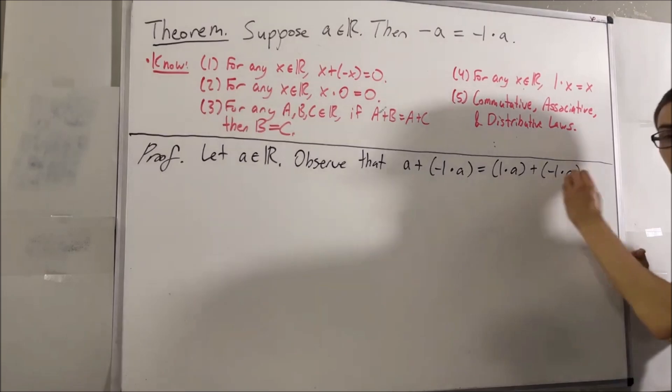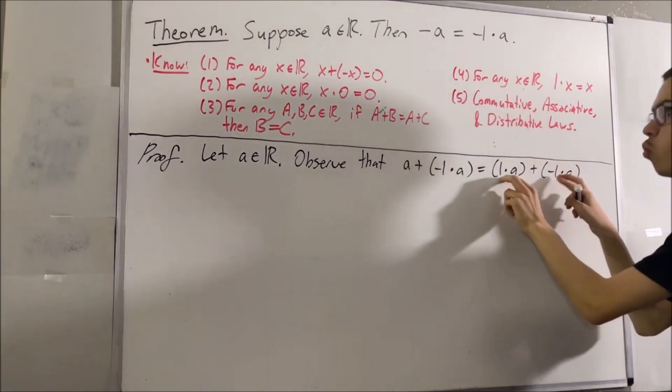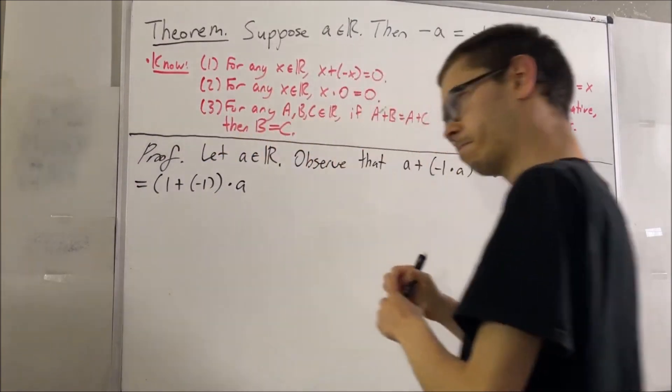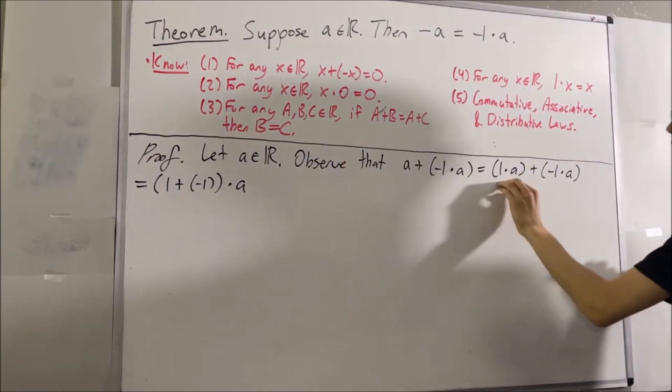But now, from the distributive law, we know that this is the same thing as the product of a and 1 plus negative 1. Right, and you guys can verify by distributing the a across that this is equal to this.